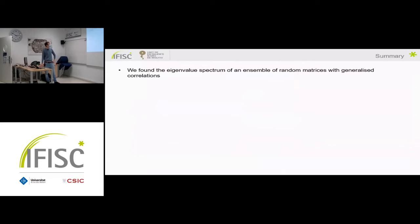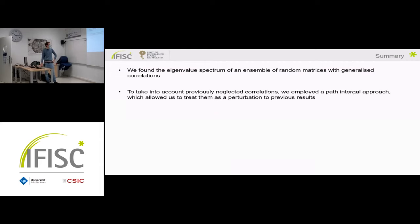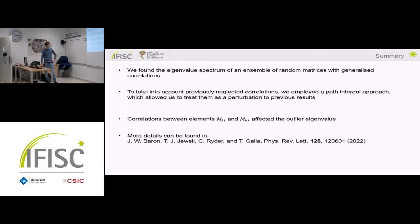To summarize the first part: we found the eigenvalue spectrum of a random matrix ensemble with quite general correlations between elements. The way we took into account previously neglected correlations was with a path integral approach, treating them as a perturbation to previous results. We found that only correlations between elements M_ij and M_ki affect the outlier eigenvalue. This was published yesterday in Physical Review Letters, and there's also a poster in the hallway.